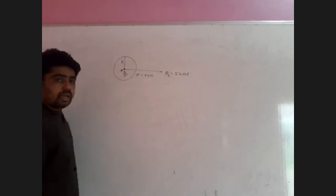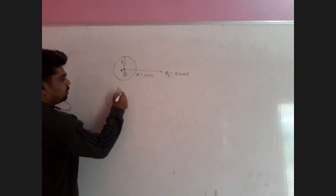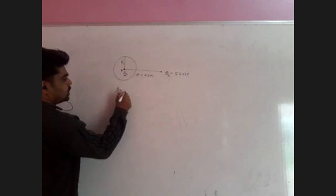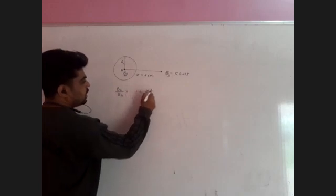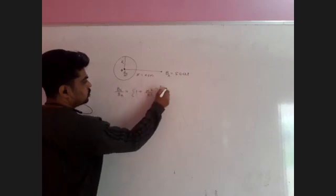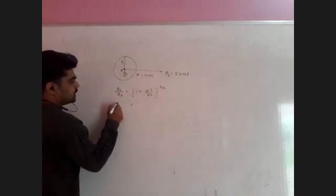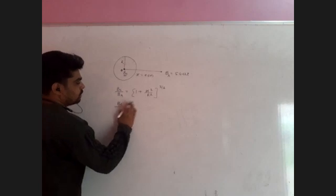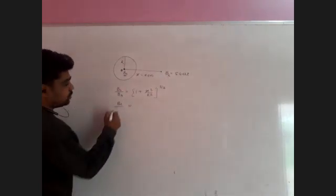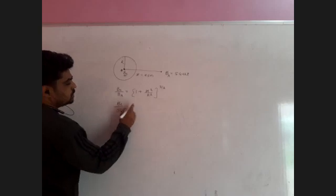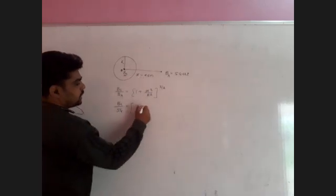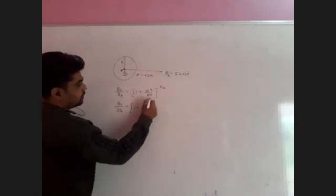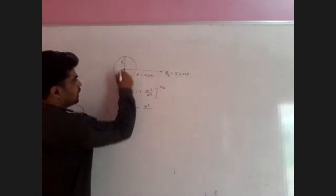As we know, the ratio B at center divided by B at x equals 1 plus x squared by R squared, raised to the power 3 by 2. So B at center divided by B at x, which is 54, equals 1 plus x squared divided by R squared, where R equals 3 cm.